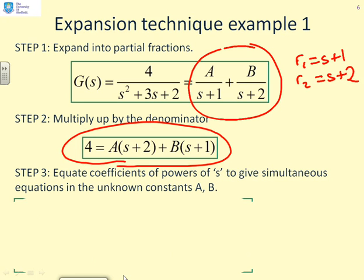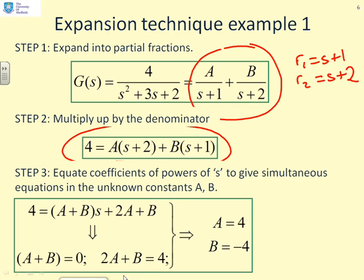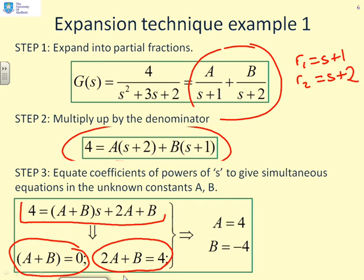Having done that, the final step, step three, is to equate the coefficients of the powers of s to give us simultaneous equations in the unknown constants A and B. So here we go. You can see this was our original equation: 4 equals A plus B times s plus 2A plus B. So if I look just at the s terms, we've got no s terms on the left and we've got A plus B on the right. So that gives us this expression: A plus B equals 0. If I look just at the constants, we've got 2A plus B equals 4. So I've got two linear simultaneous equations, which I can solve. And that gives me A equals 4, B equals minus 4.